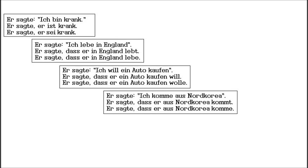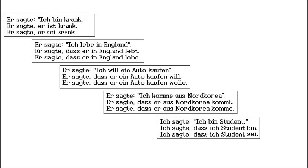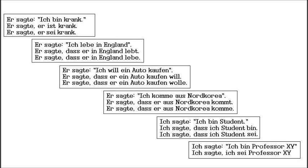By the way, if you distance yourself from your own statement, that means you're saying you just pretended something. 'Ich sagte, ich bin Student' / 'Ich sagte, dass ich Student bin' / 'Ich sagte, dass ich Student sei.' In this example, the Konjunktiv 1 sounds like you pretended to be a student. Similarly: 'Ich sagte, ich bin Professor XY' / 'Ich sagte, ich sei Professor XY' — here you pretended to be a professor.